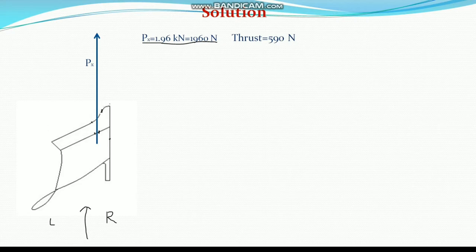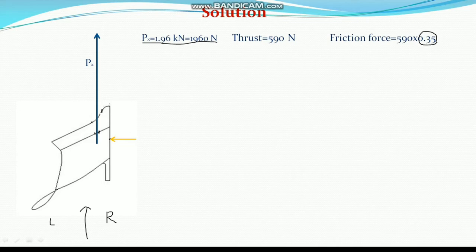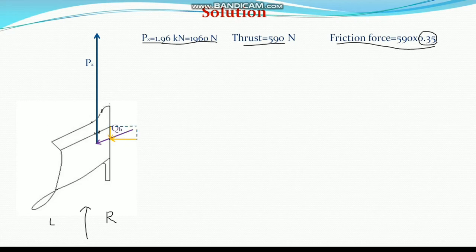Thrust is the force acting normal to the land side. This is the thrust force acting on the land side, given as 590 N. Since there is soil-metal friction given as 0.35, we know according to frictional force that the frictional force will be acting in this direction — it is the multiplication of normal force into the friction coefficient. Now if you consider these two forces, thrust and frictional force, then their resultant will be QH, the resultant of thrust and frictional force, which are called the parasitic forces.